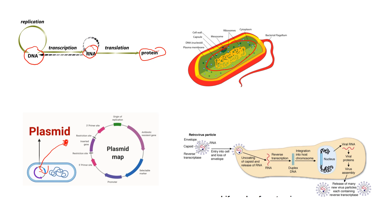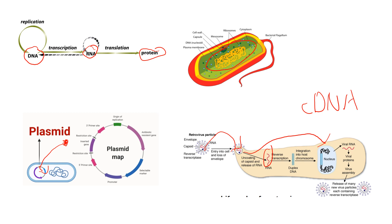Viruses are a little different — they're technically not prokaryotes and not alive. What viruses do is insert their DNA or RNA into a host cell, like a human or bacterial cell, and hijack it to produce more viral DNA and more viruses. In some cases they kill the host cell. Viruses can have a unique protein called reverse transcriptase, which turns RNA into cDNA — essentially cloning DNA from RNA — which defies the central dogma of biology.